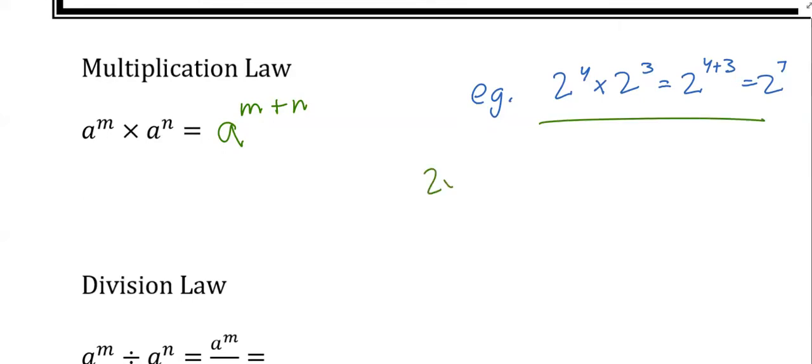If you want to see why it works, 2 to the 4 is 2 times 2 times 2 times 2, times 2 to the 3 is 2 times 2 times 2. Well, that's 2 to the 7. That's 2 times itself 7 times because I've got 4 here and 3 here. It doesn't matter that the multiplication sign came from somewhere else. Math doesn't care about that. So you could regroup this. That's what simplifying is all about, doing things that are convenient for what you're trying to do.